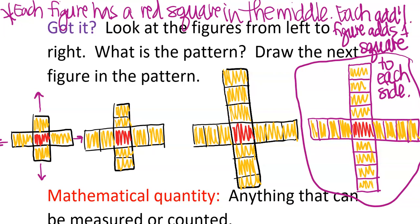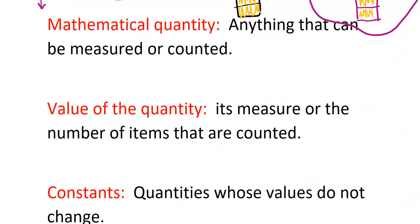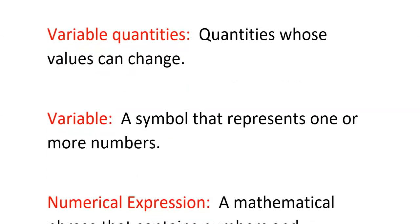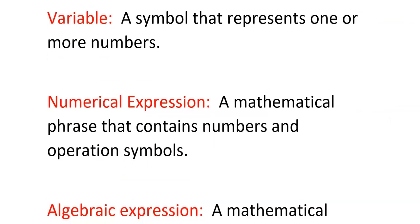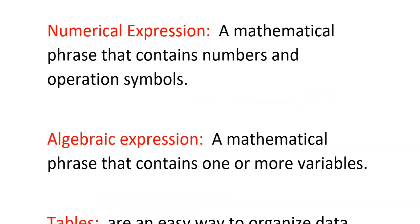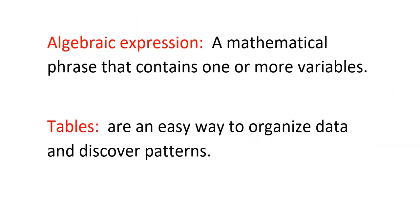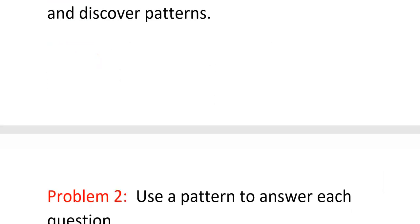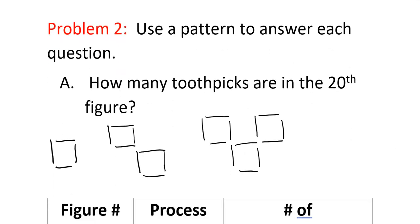Now let's look at some vocabulary. Mathematical quantities are anything that can be measured or counted. The value of a quantity is its measure or the number of items counted. Constants are quantities whose values do not change. Variable quantities are quantities that do change. A variable is a symbol that represents one or more numbers. Numerical expressions contain numbers and operation symbols. Algebraic expressions contain one or more variables. Tables are easy ways to organize data and discover patterns.